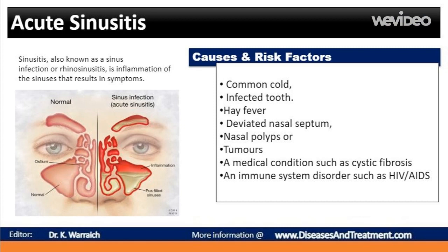Acute sinusitis is most often caused by the common cold, which is a viral infection. In some cases, a bacterial infection develops, and infection can spread to a cheekbone — maxillary — sinus from an infected tooth. Other risk factors may include hay fever or another allergic condition that affects your sinuses, a nasal passage abnormality such as a deviated nasal septum, nasal polyps or tumors, or a medical condition such as cystic fibrosis or an immune system disorder such as HIV/AIDS.